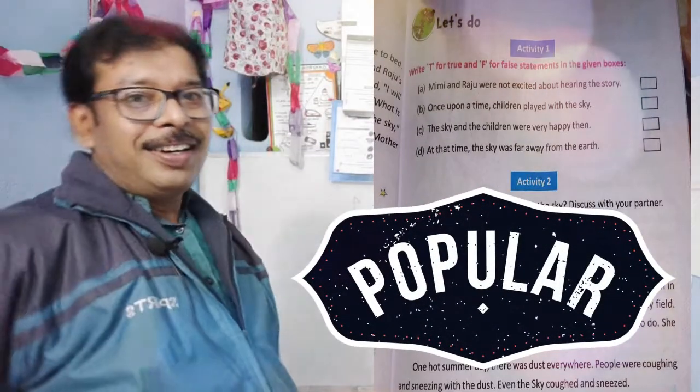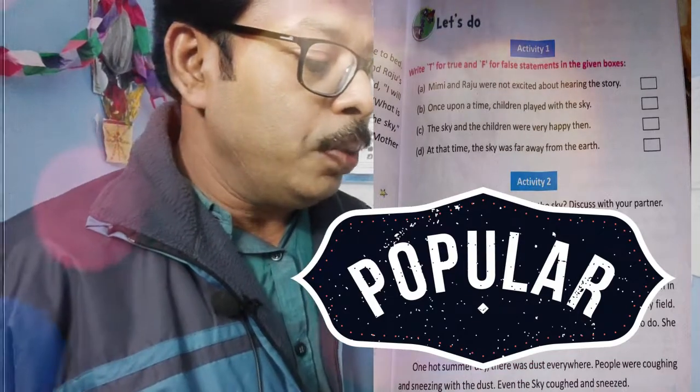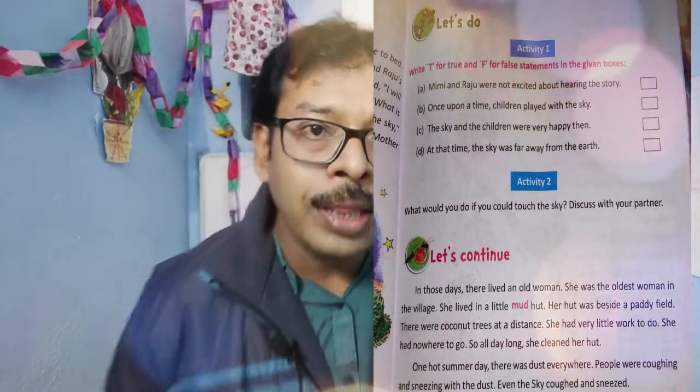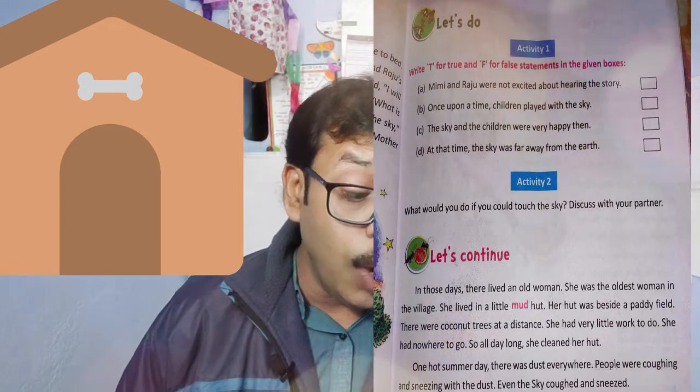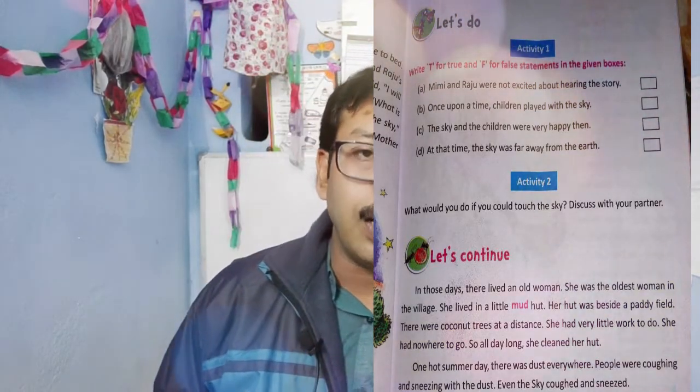Activity two: What would you do if you could touch the sky? Discuss with your partner. If you could touch the sky, you could play like a friend. Next part: In those days there lived an old woman. She was the oldest woman in the village. She lived in a little mud hut, and there were coconut trees at a distance. She had very little to do — no work, no play — which made the old lady lazy and critical. She had nowhere to go, so all day long she cleaned her hut.